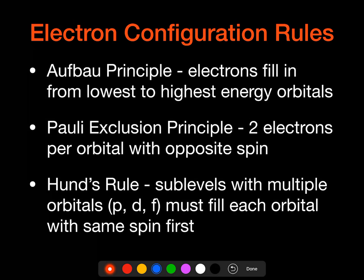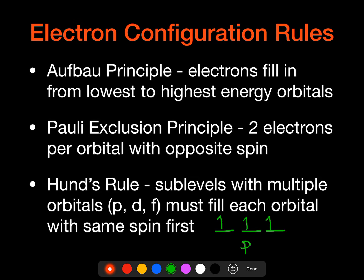And so, for example, if we had something that was a P orbital, and say in the P's we had a P4, we would have an up arrow for the first three, and then we would backfill in a down arrow. And so we want to make sure we fill all up and then go down.